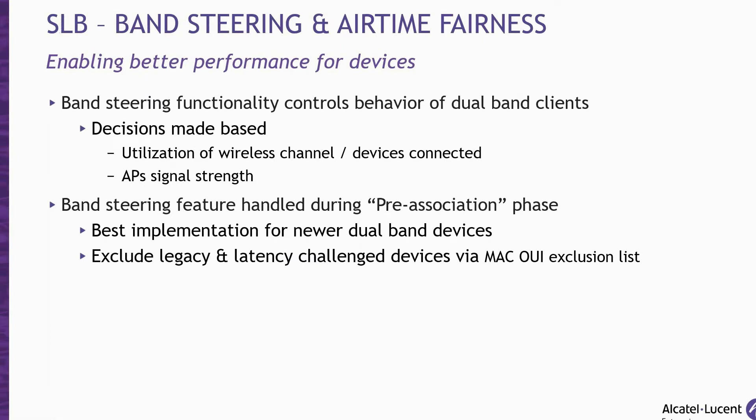The band steering functionality controls the behavior of dual-band clients based on the utilization of the wireless channel and devices connected to the AP. Band steering helps Wi-Fi devices to be associated on a better radio band, based on the RSSI strength to the radio bands and RF utilization on each channel. It also determines the number of devices on both radio bands and calculates the difference. Band steering functions are handled during the pre-association phase. If band steering is enabled and you want certain clients excluded from this functionality, the administrator has the option to exclude those devices via the MAC OUI exclusion list. The exclusion list is recommended for legacy and latency-sensitive clients such as IP-based scanners.